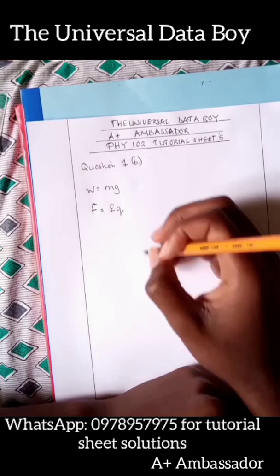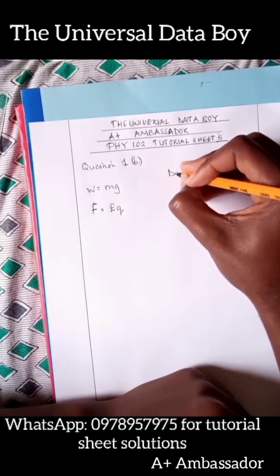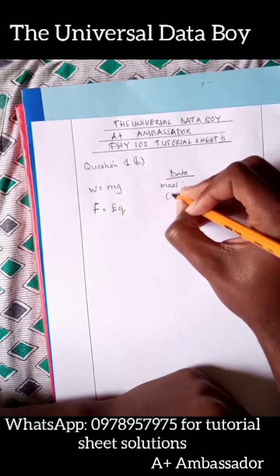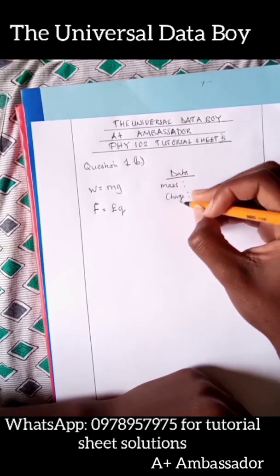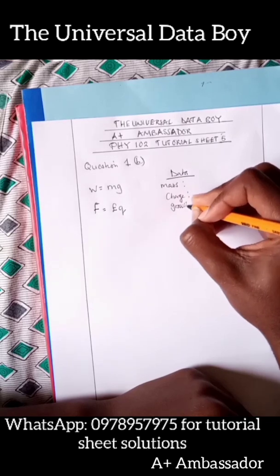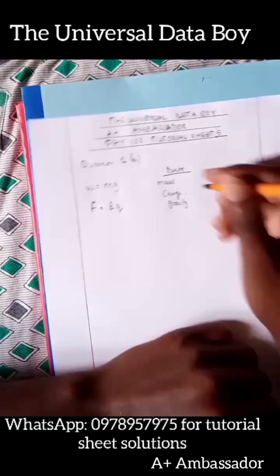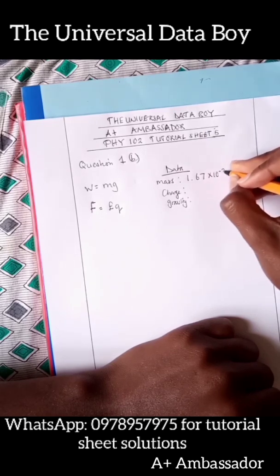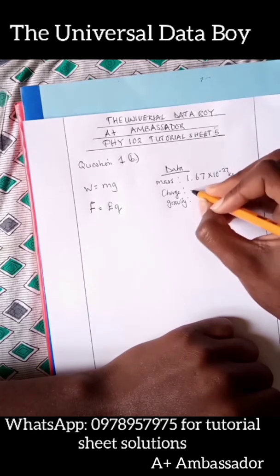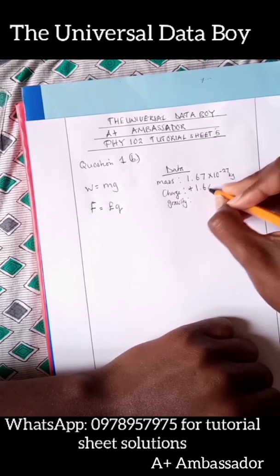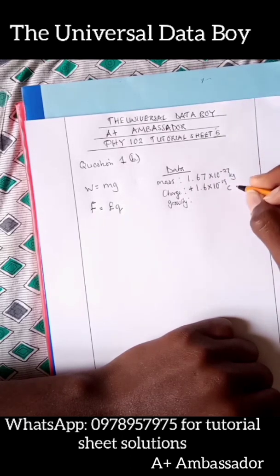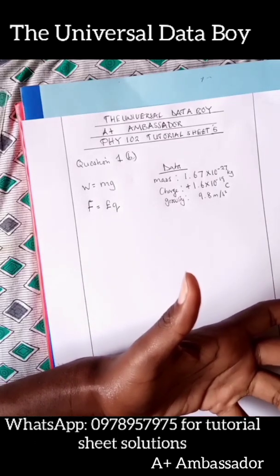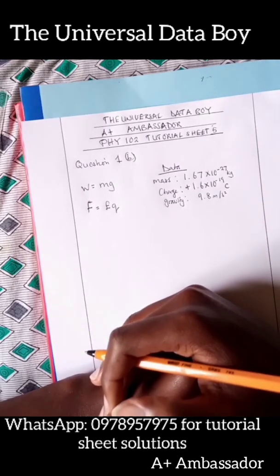So now we can go forward and list our data. We have the mass of a proton, we have the charge of a proton, and then we also have the gravity on earth. So the mass of a proton is 1.67 times 10 to the power negative 27 kilograms, and then the charge of a particle which is a proton is 1.6 times 10 to the power negative 19, and then gravity is 9.8 meters per second squared. Of course you don't have to master this, they are always in the question sheet on the second page, and you can find these.